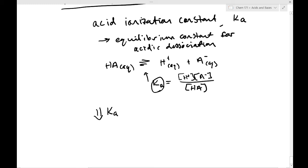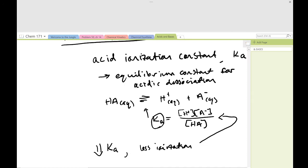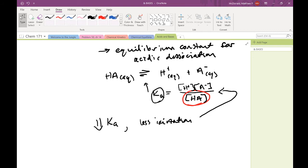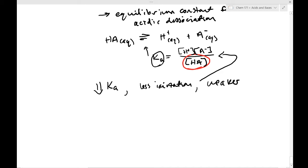So here we have a way of quantifying how strong or weak an acid is. If the Ka is small — if Ka goes down — that means there is less ionization. If you look at the expression, a smaller Ka means there is more of the protonated form of the acid in solution, so a larger number in the denominator, and because of this Ka is a smaller number. With a small Ka, you have a weaker acid. So the smaller the Ka, the weaker the acid.